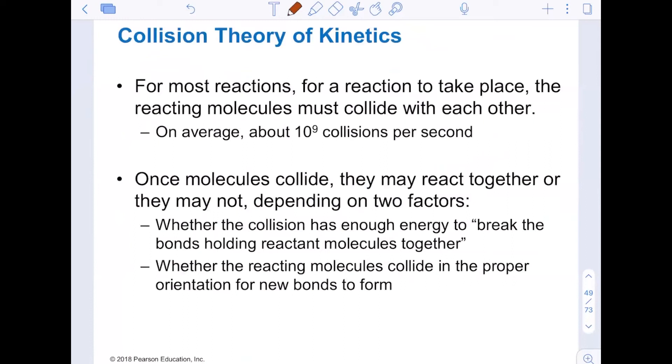Wrapping up collision theory for us. Collision theory is talking about how do the molecules actually get the reaction going? So for a reaction to take place, the reacting molecules must collide with each other. On average, about 10 to the 9, a billion, collisions per second. Once the molecules collide, they may either react together or they may not. And that is dependent on, did they have enough energy to actually reach the activation energy itself? And were they in the proper orientation to form new bonds? Not only do they have to collide and run into each other, they have to run into each other by hitting the correct atoms. And so there's a lot of things affecting the actual rate of the reaction based off of the types of collisions that the molecules are experiencing.